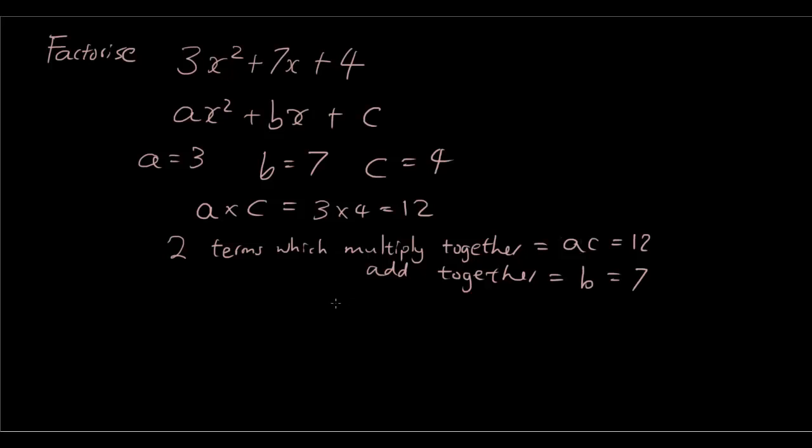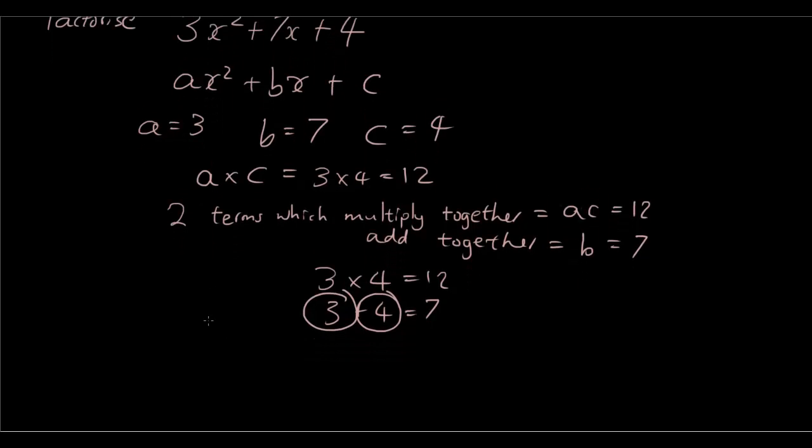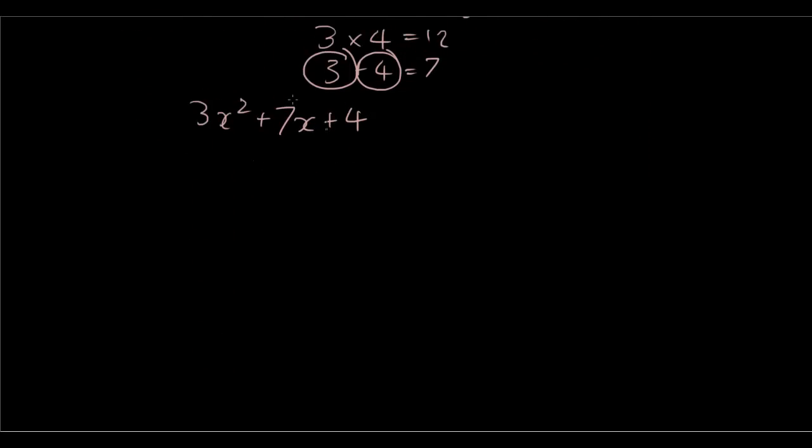So obviously it is going to be 3 times 4. 3 times 4 is 12, 3 plus 4 is 7. Now once you have found the two terms which are 3 and 4, what I am going to do is separate the term in the middle which is 7x. So 3x squared plus 3x plus 4x plus 4. So what I have done is I have just separated the 7x into two bits, 3x and 4x. Now that is allowed because 3x plus 4x is 7x anyway.